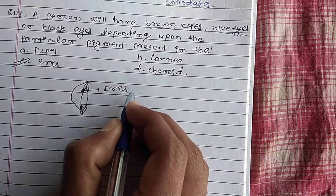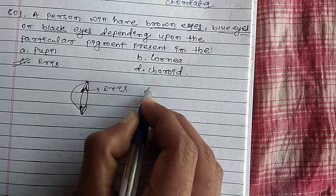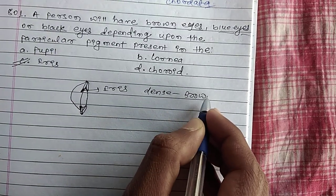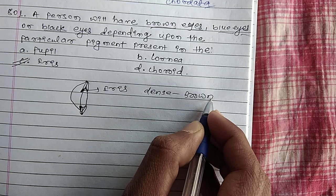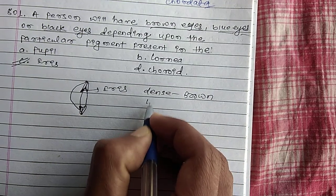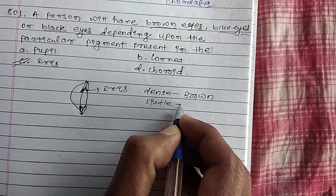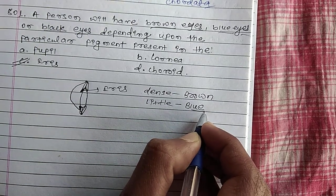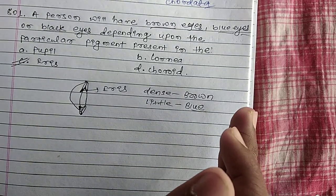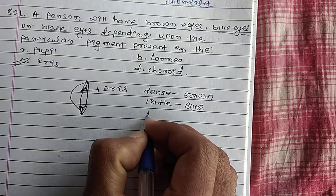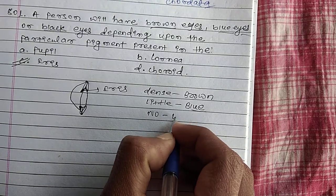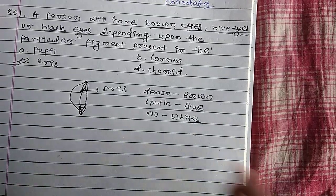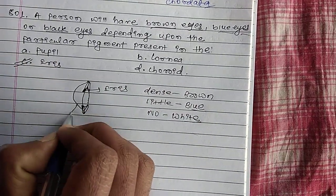If the pigment is dense, then the color of the iris will be brown. If the pigment is thin, it can be blue. If there is no pigment, the color of the eye will be white.